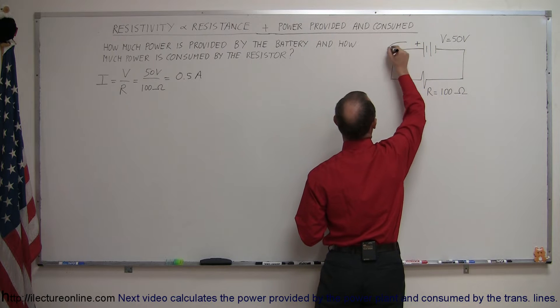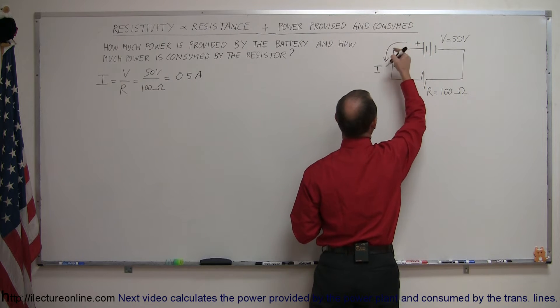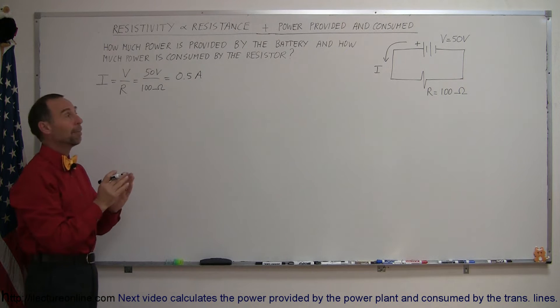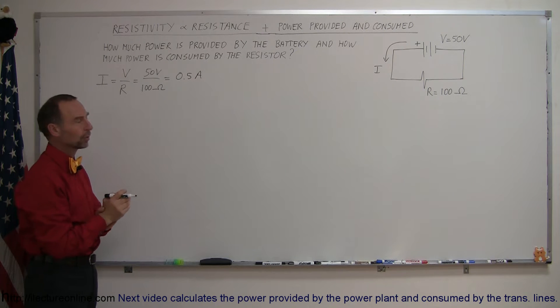This is the positive end of the battery. You can imagine the current to be flowing through the circuit like that. Now power provided and power consumed.